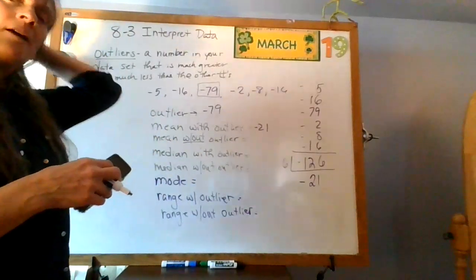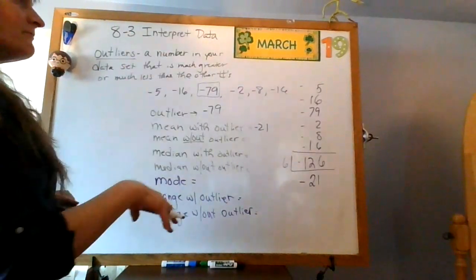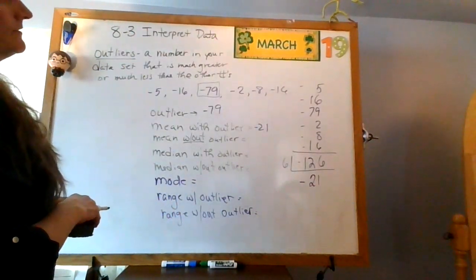It's smaller than all of those numbers. And so I'm thinking, hmm, that isn't very representative. Okay, what if I did this without my negative 79?